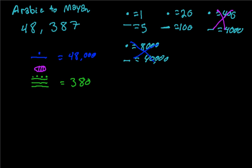And we need 7 more. So, we'll mark this out. And we'll draw 7 more. So, 7 is 5, 6, 7. That's equal to 7. And if we add these all up, we get 48,387, which is what we wanted.